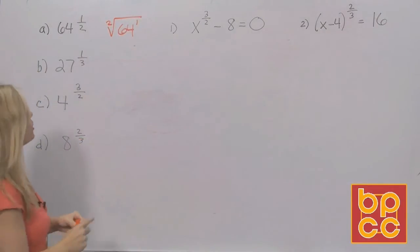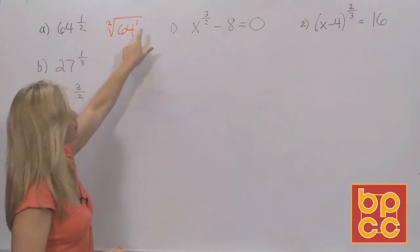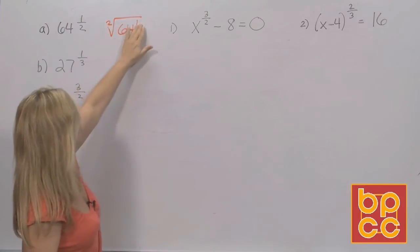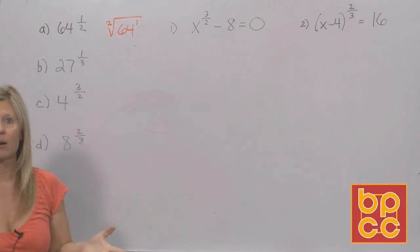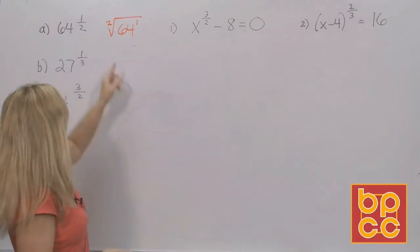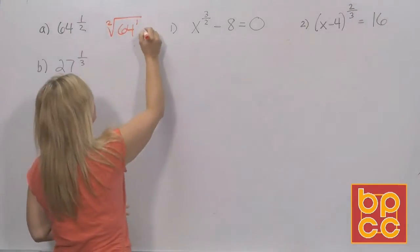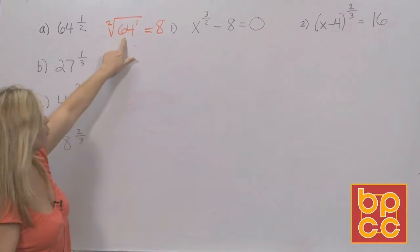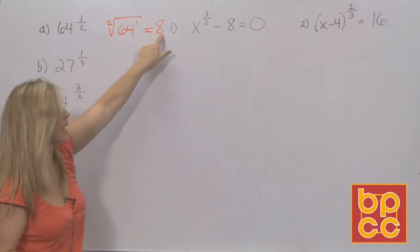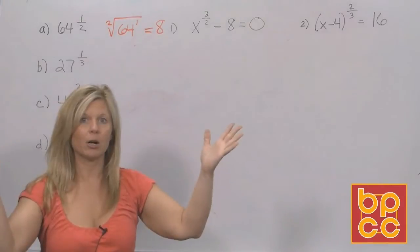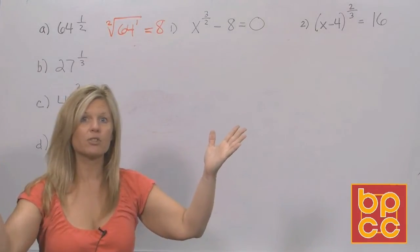The denominator is 2, so it's a square root of 64 to the first power. You can do the root first or the exponent first — it doesn't matter. The square root of 64 is 8, and 8 to the first is 8. It's easier to do the root first since roots make numbers smaller and exponents make them bigger.